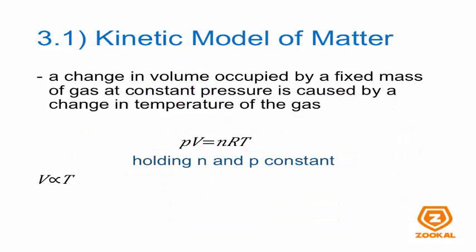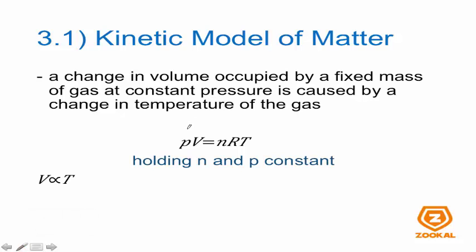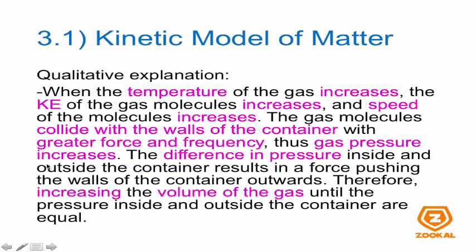Now we'll look at how a change in volume affects the temperature of a gas, assuming fixed mass and constant pressure. With P constant, N constant, and R already a constant, what you end up with is V is proportional to T. See, this equation PV equals nRT is super useful.